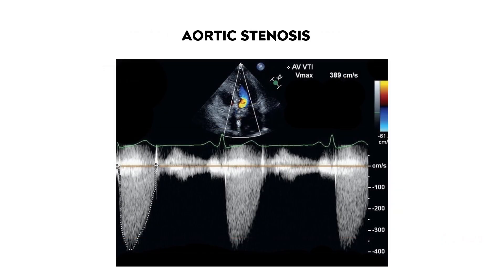Compare the dagger-shaped appearance of LVOTO to aortic stenosis. Both conditions have very fast velocity, but aortic stenosis has a parabolic shape, not a dagger shape. This is because aortic stenosis is a fixed obstruction rather than a dynamic obstruction, so there is no sudden acceleration of blood flow due to the Venturi effect leading to systolic anterior motion of the mitral valve.